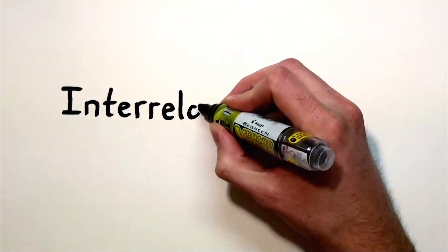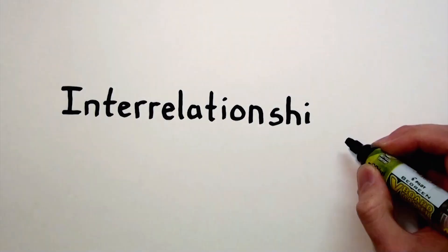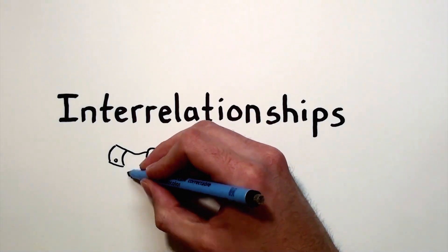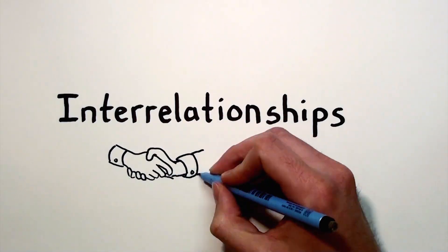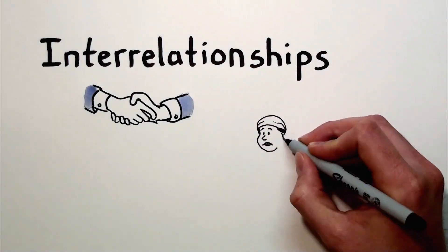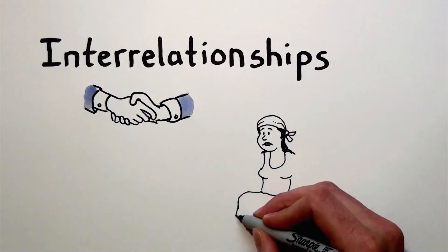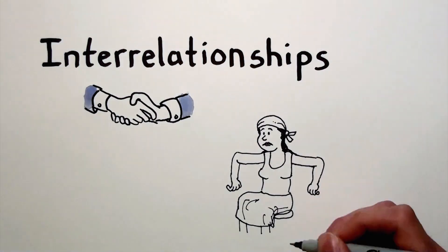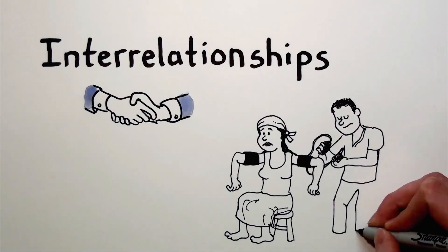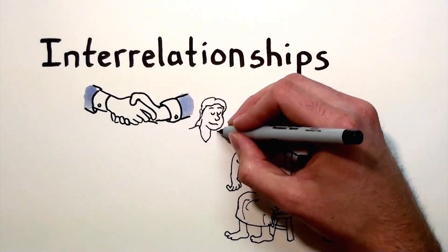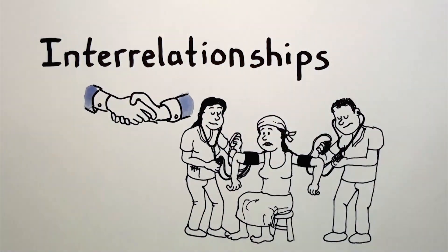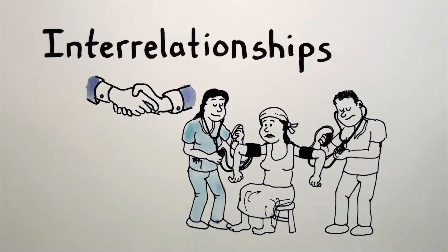First, we must consider interrelationships and the patterns of interactions between individuals and organizations over time. Sometimes global health organizations implement programs without considering the activities of other organizations working in the same area. This can lead to duplication of services in some areas and lack of services in others.